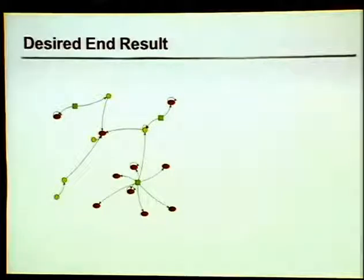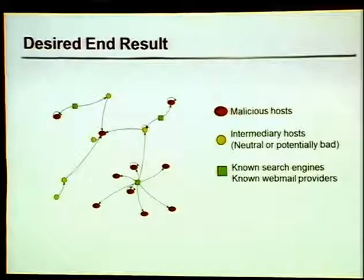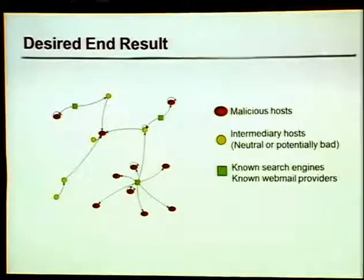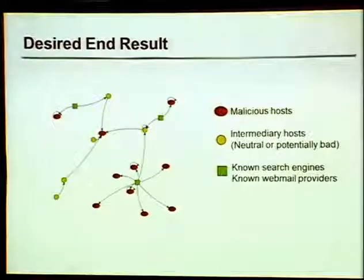The desired end result is something clear, crisp, logical to follow, and obvious what each domain is doing in the network. Everything is colored: red are the malicious hosts — specifically payload servers or very core infrastructure. Yellow are the intermediary hosts, which might be unwilling participants, hacked, or perhaps hosting ads where one of the ads is specifically for malware. Green are the known benign domains like Google, which honestly is one of the biggest vectors to find malware — but they don't do it on purpose.